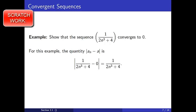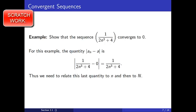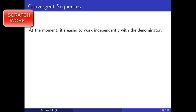To begin, we identify a_n and a. For this example, the quantity |a_n − a| is given by the absolute value of 1/(2n³+4) − 0, which simplifies to 1/(2n³+4). Thus, we need to relate 1/(2n³+4) to n and then to N. At the moment, it's easier to work independently with the denominator. Our goal is to simplify the expression 2n³+4 using lower estimates — you will see why when we return to the denominator. We will make use of the order properties of the real numbers. See definition 1.2.4, theorem 1.2.5, and exercise 1.2.5.